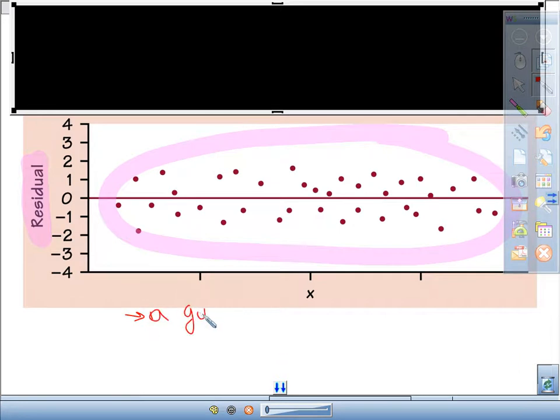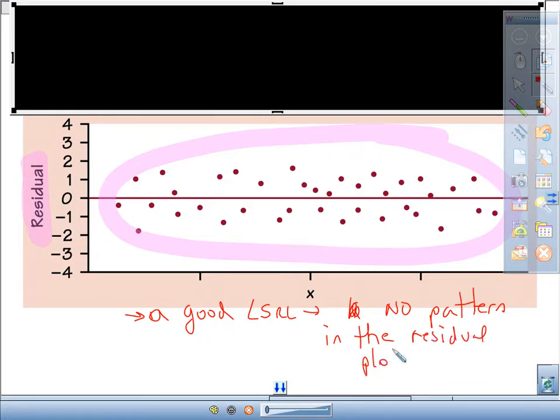A good least squared regression line shows no pattern in the residual plot. That's what a good least squared regression line has—no pattern in the residual plot.